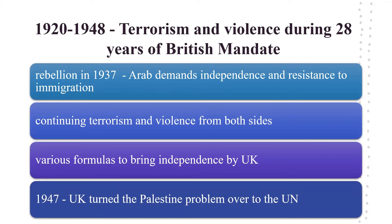Arab demand for independence and resistance to the immigration of Jews in Palestine led to a rebellion in 1937, which was followed by continuing terrorism and violence from both sides. The UK considered various formulas to bring independence to a land ravaged by violence. In 1947, the UK turned the Palestine problem over to the UN.